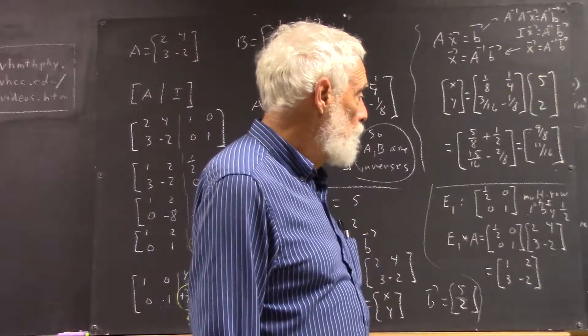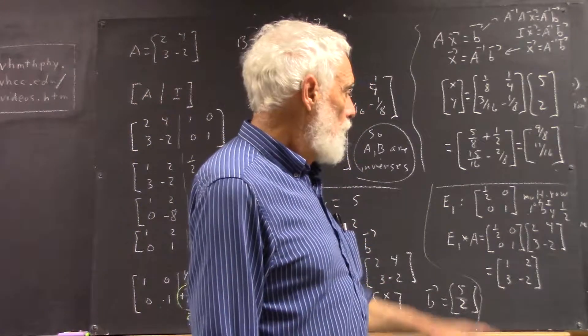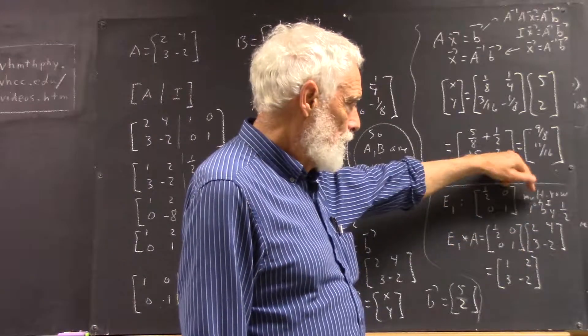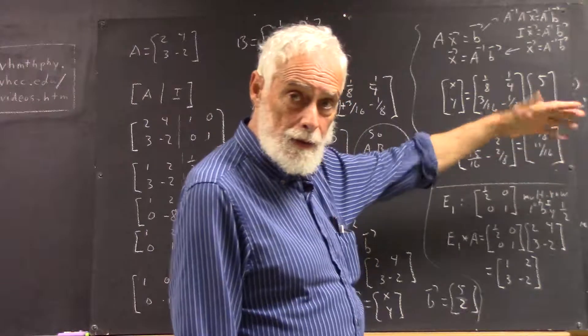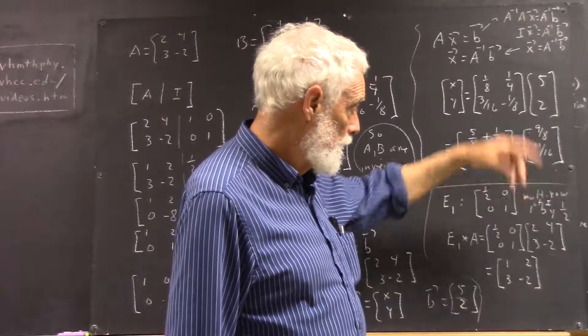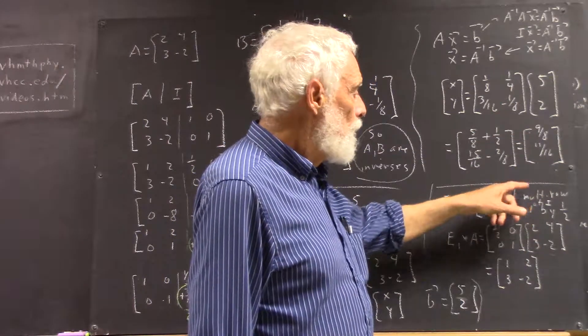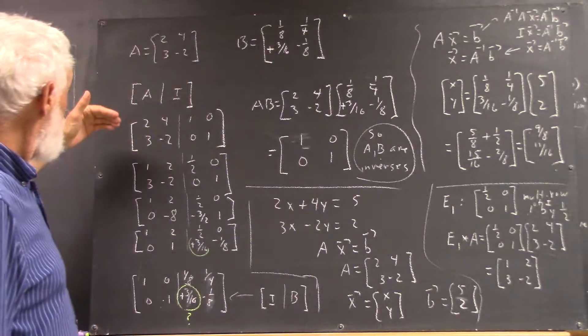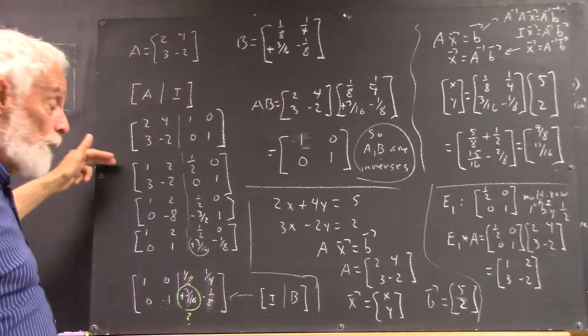Our elementary matrix is what you get when you multiply the first row, row one—and it's hard to read that—it says of the identity. I had to insert that. I didn't really write it. Then I decided I needed to. We multiply the first row of the identity by one-half. So that is, we multiply the first row of this by one-half.